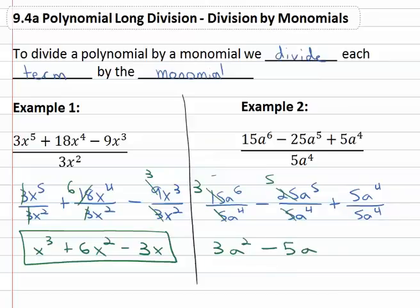a to the subtracting exponents 5 minus 4 is 1. We don't really have to write the 1 plus 5 over 5 is 1. A to the 4 minus 4 is 0 and anything to the 0 is just 1 so we're left with 1. Our final answer then from dividing by the monomial is 3a squared minus 5a plus 1.